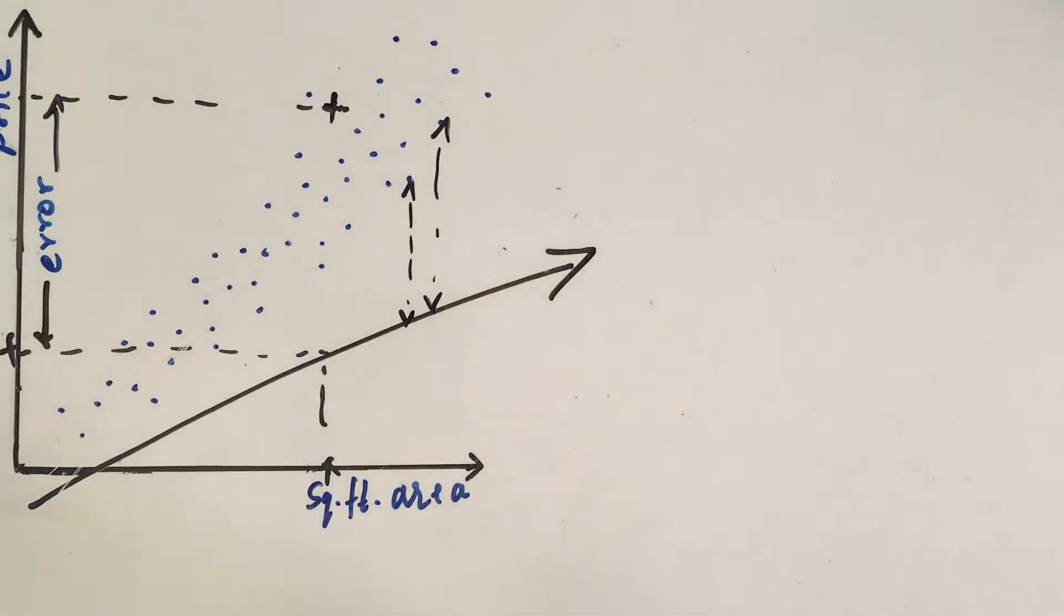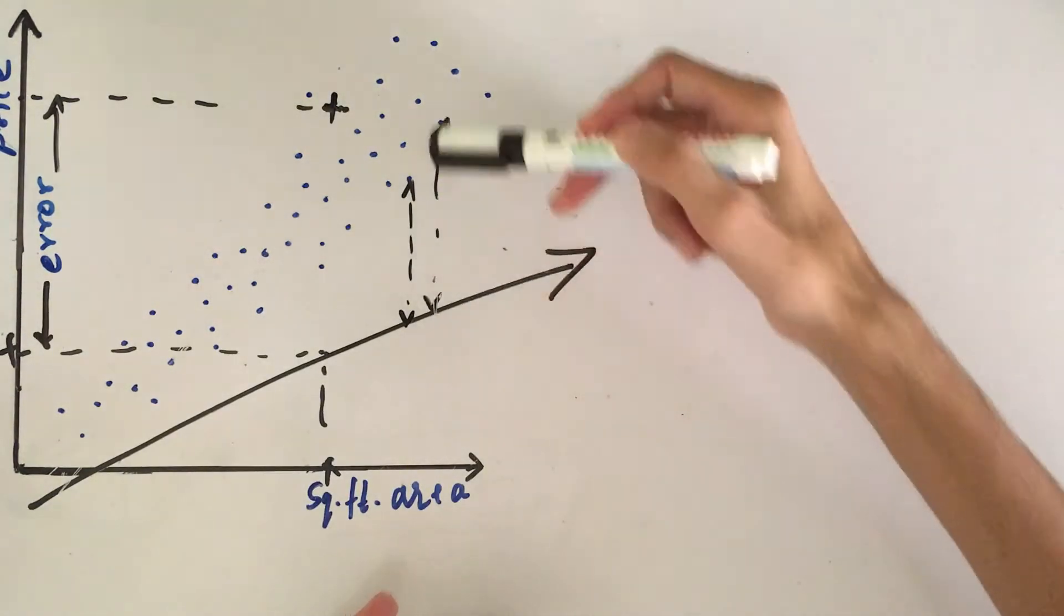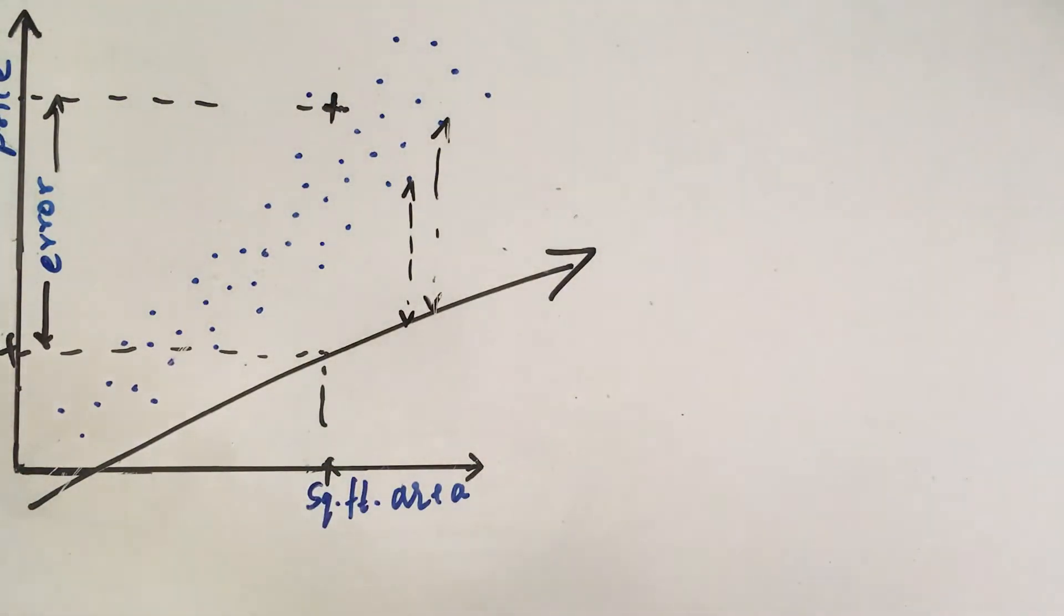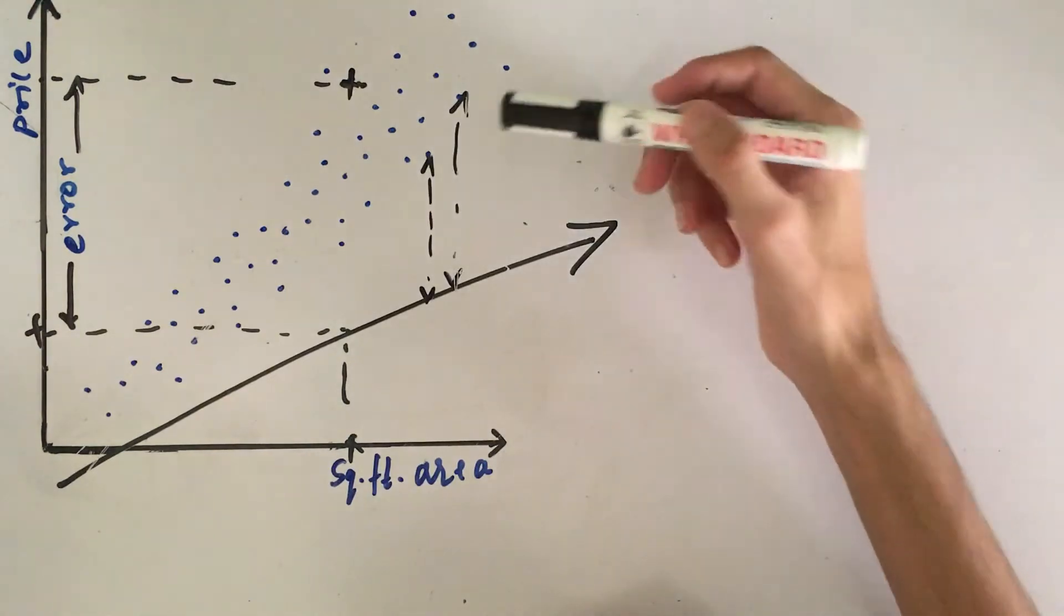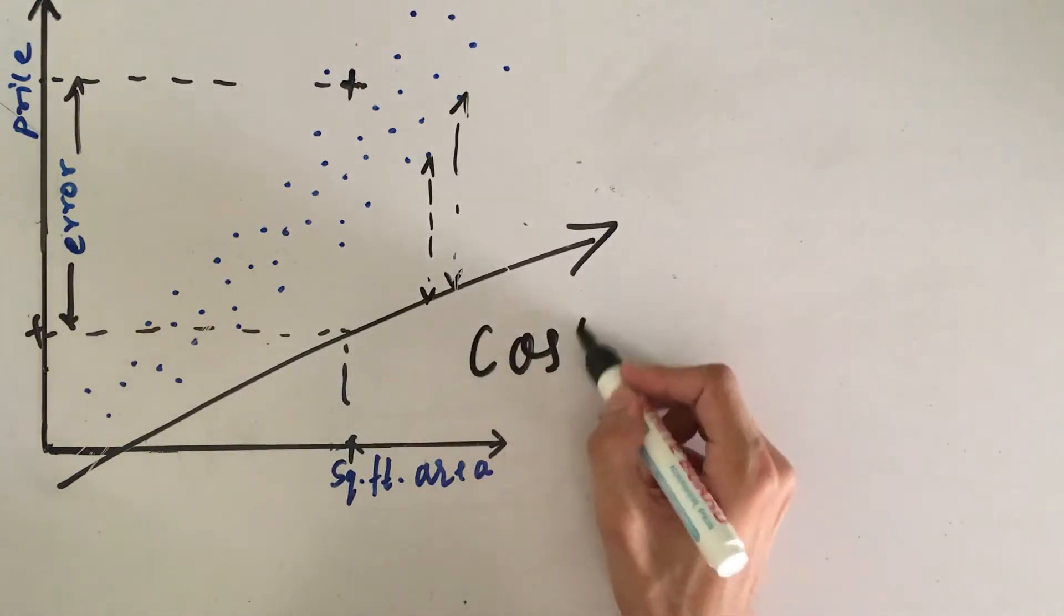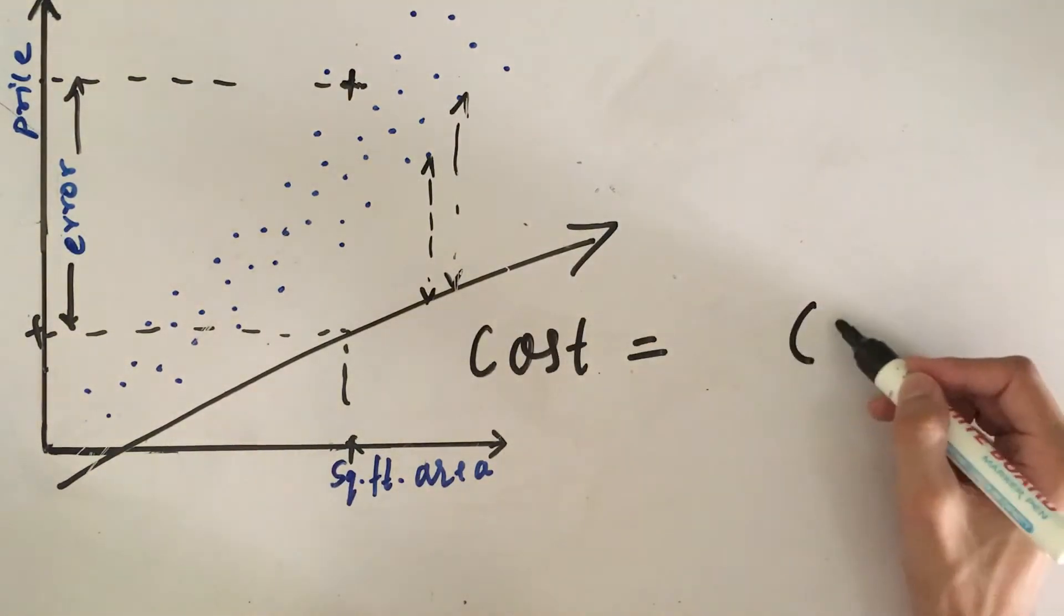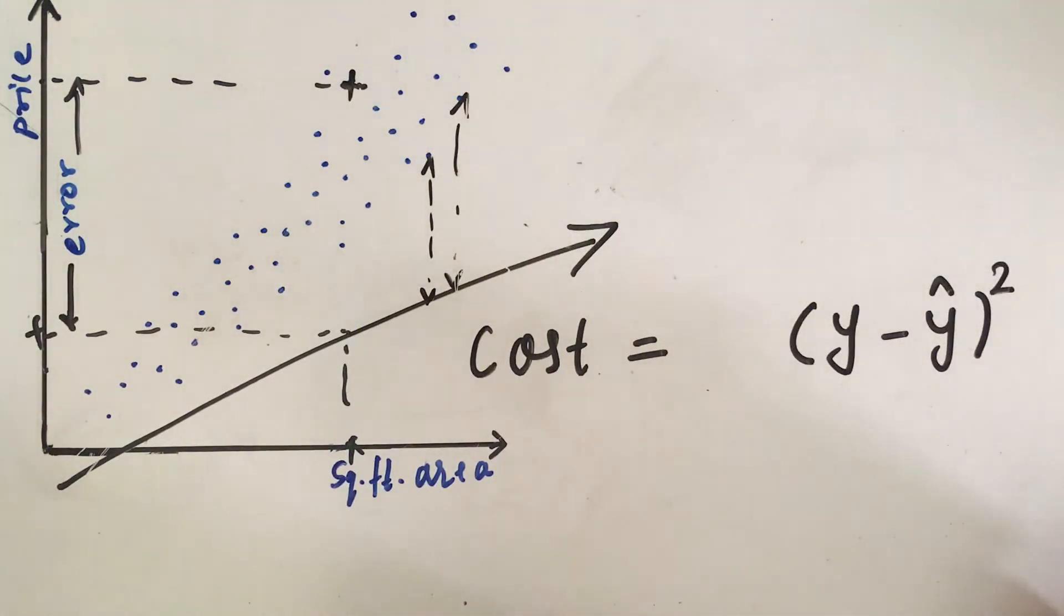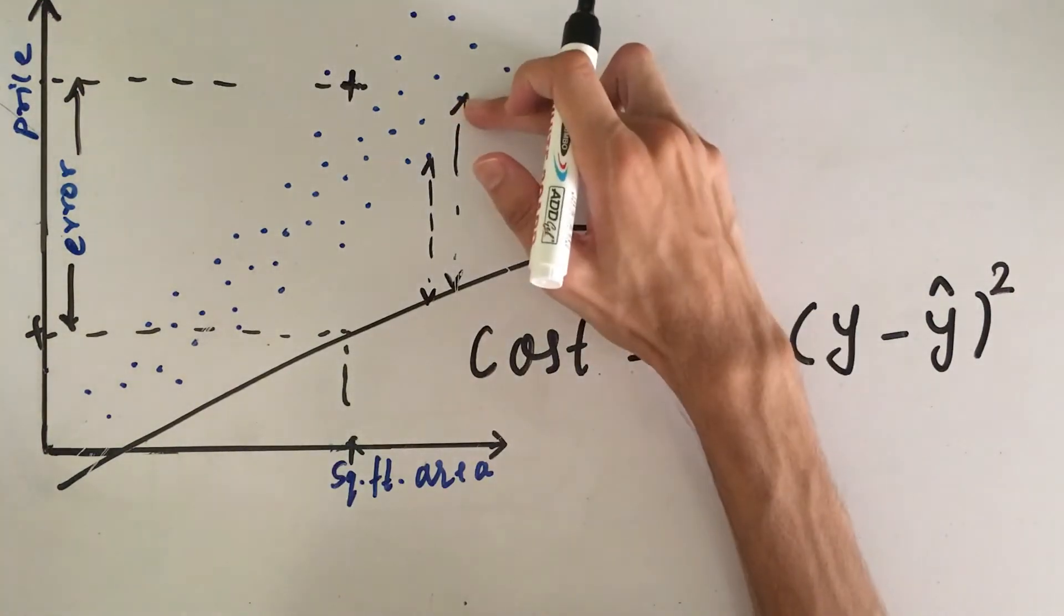Now, that is where the cost function comes into picture. The cost function represents the error between the actual value and the predicting value. We can write the formula for the cost function as cost equals difference between actual value minus predicting value. And as we are just seeing the magnitude of it, I'm going to do square. This is the difference for only one data point.